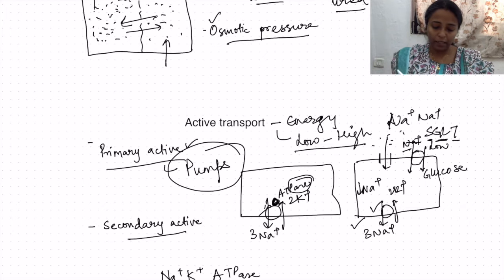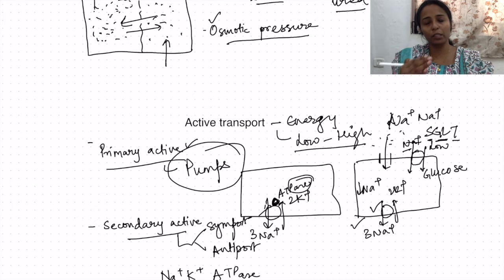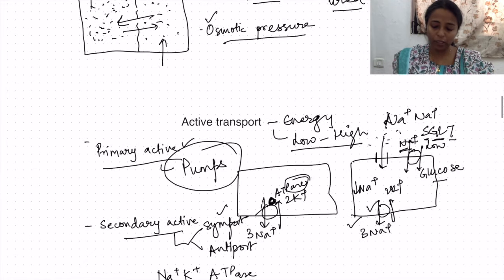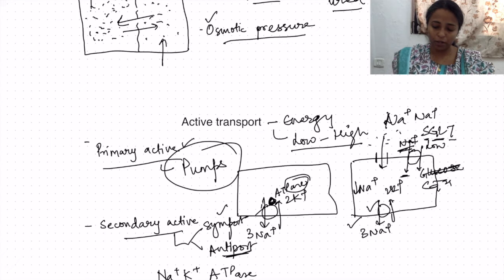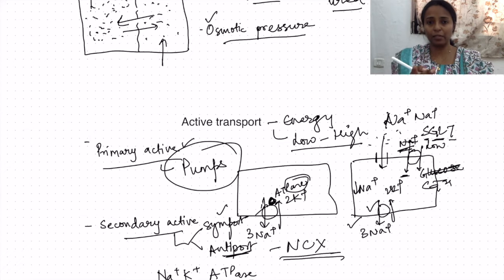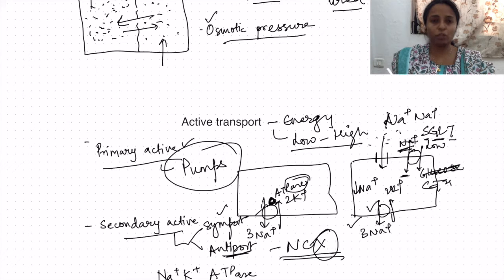In secondary active transport, there are two types: symport and antiport. Symport is when both molecules are transported in the same direction — for example, SGLT transports both sodium and glucose from outside to inside. Antiport is when they move in opposite directions — sodium moves outside to inside while the other substance moves inside to outside. An example is the sodium-calcium exchanger, and these proteins are called exchangers.